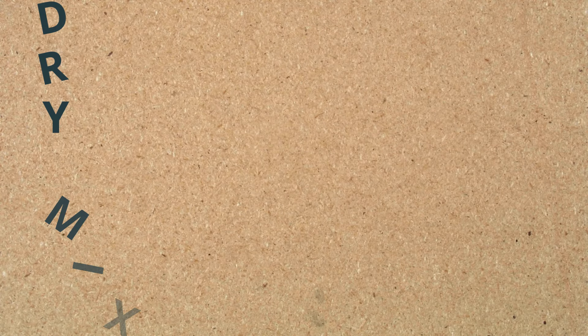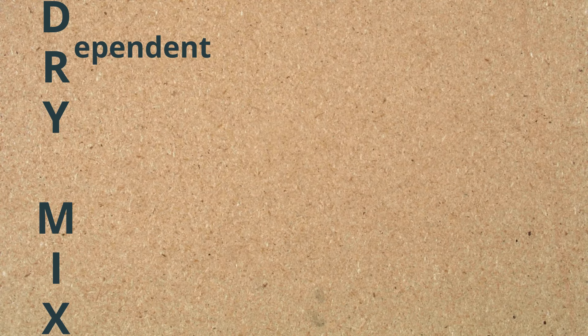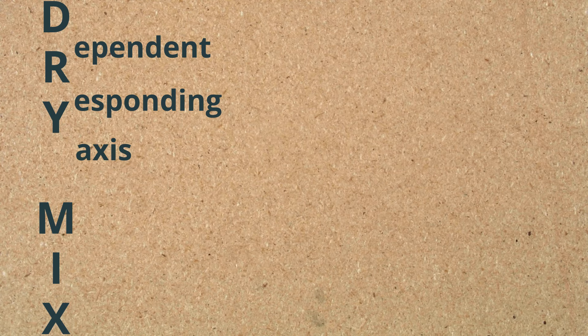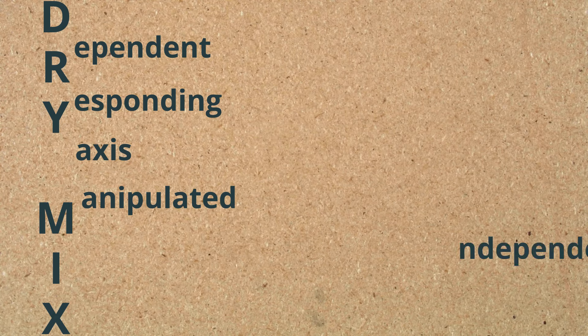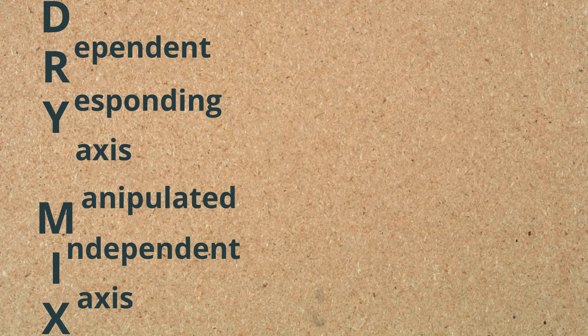Another tip — you may have heard this: DRY MIX. The D stands for dependent, R for responding, and the Y for the y-axis. So the dependent variable always goes on the y-axis. And then the MIX is for manipulated, independent, x-axis. So your independent variable always goes on the x-axis. Just a tip to help you remember which axis to put your independent and dependent variable.